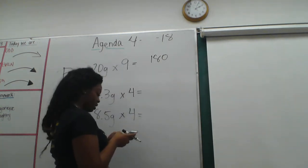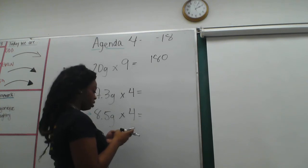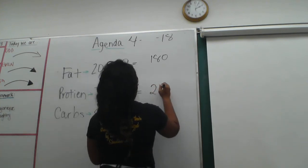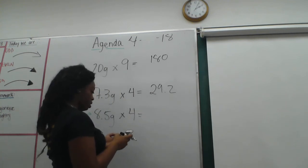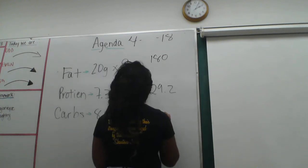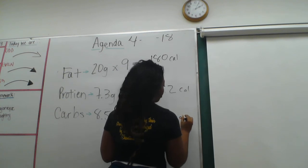I'm going to multiply 7.3 times 4, and that's going to give me 29.2. Then I'm going to multiply 8.5 times 4, and that's going to give me 34. All of these are calories for each category.